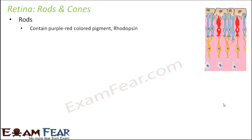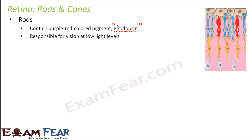Rods are cells on the retina which contain a purple-to-red colored pigment called rhodopsin. It is due to this photopigment that rods can actually receive light. Rods are responsible for vision at low light levels — when the intensity of light is low, the wavelengths of light can be received by rhodopsin, so rods help in seeing at dim light. The presence of rods is more numerous than cones.